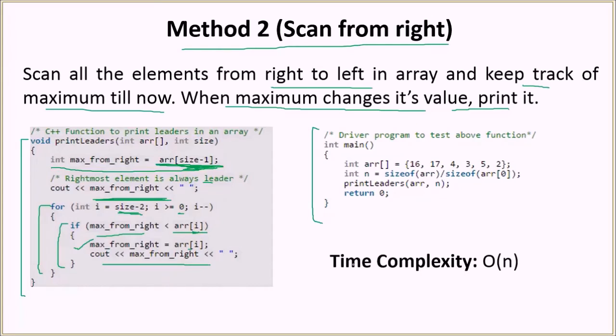So this algorithm actually runs in the time complexity of order of n, which is really good because that's the minimum possible time complexity. We are actually just processing each element once and we do not even have a nested loop like in the previous case. So this is pretty good.